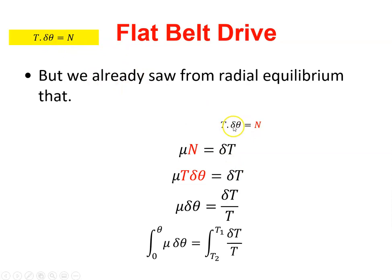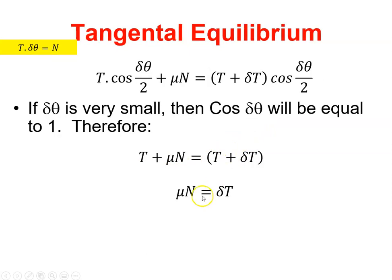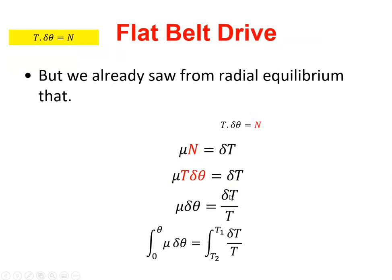Okay, we've parked this guy. T times Dθ is equal to N. And now I have μN is equal to DT from here. But we've a value for N here. So N is T times Dθ. So instead of N, I'm going to put in T times Dθ. And then I'm going to divide both sides by T. So this becomes μ times Dθ equals DT over T.